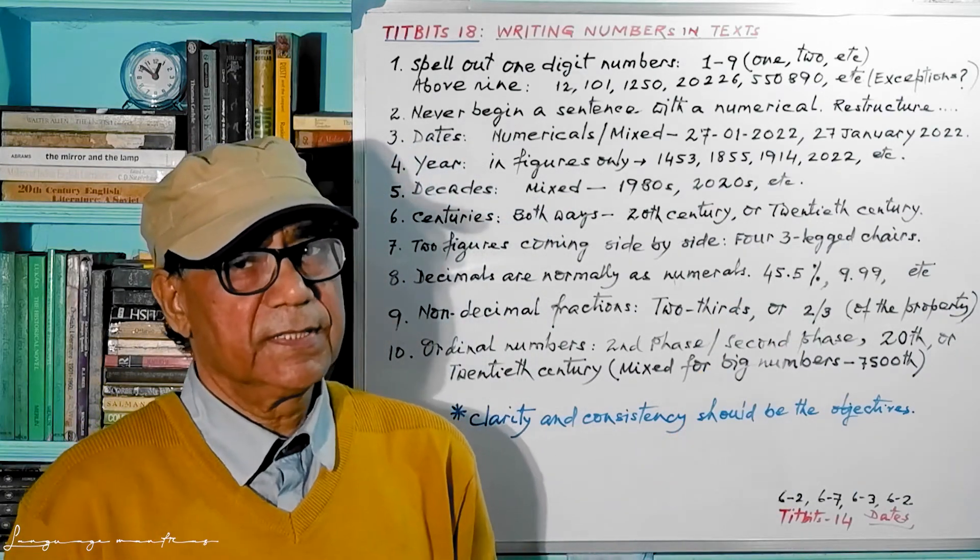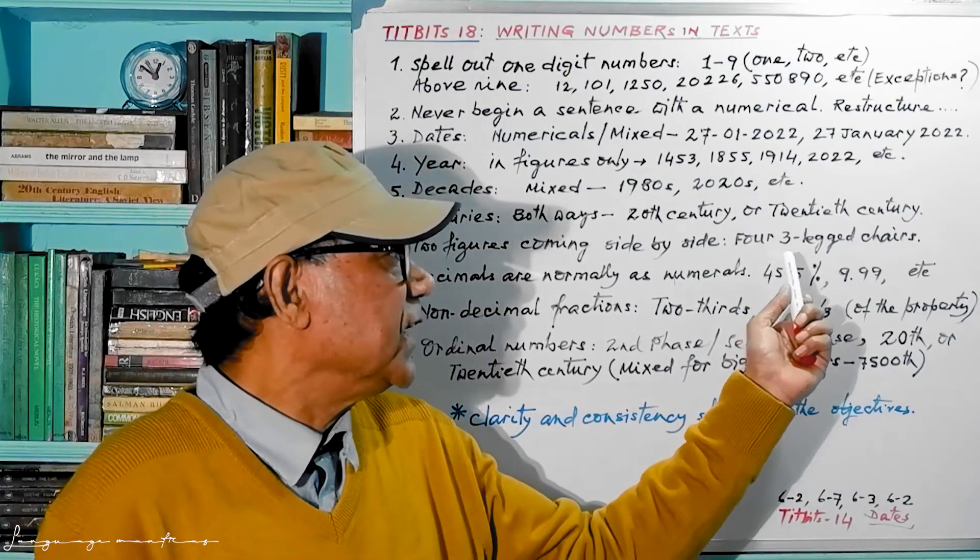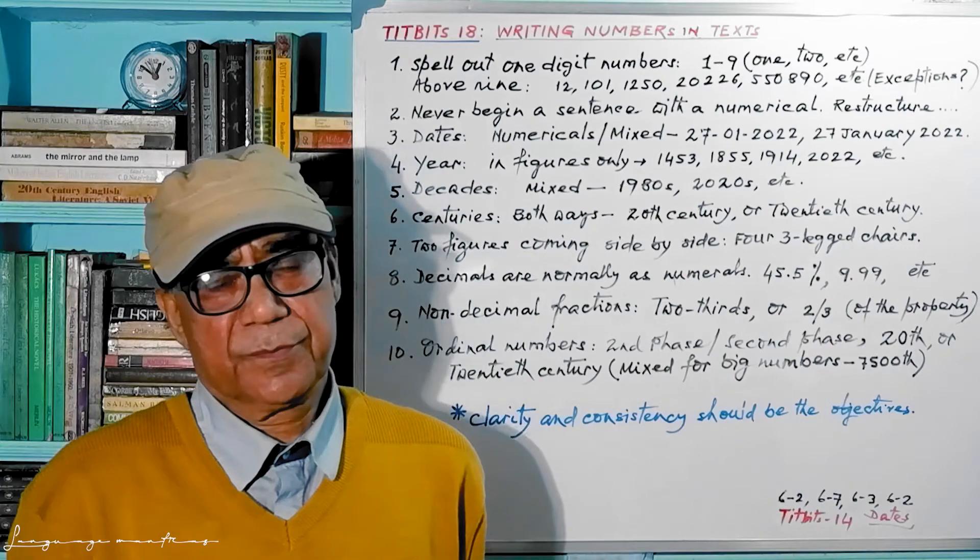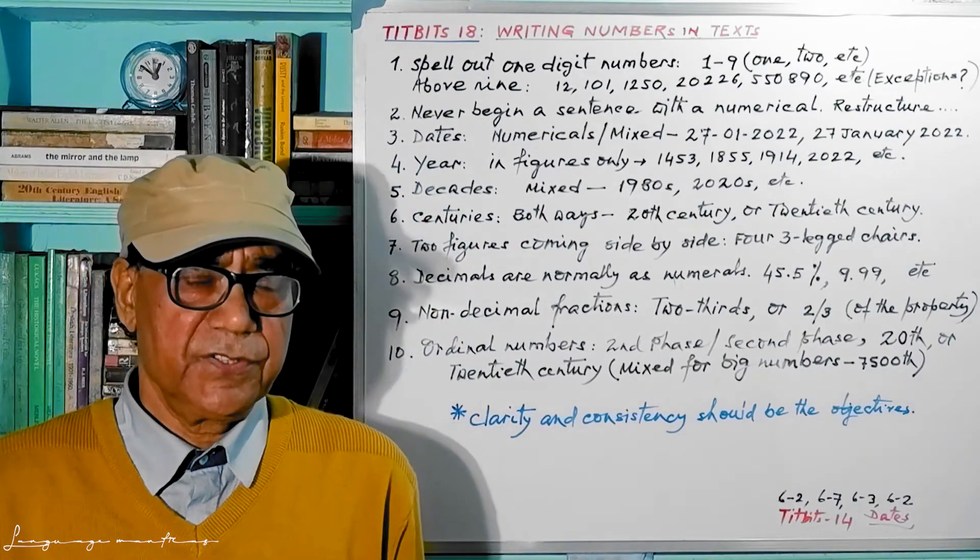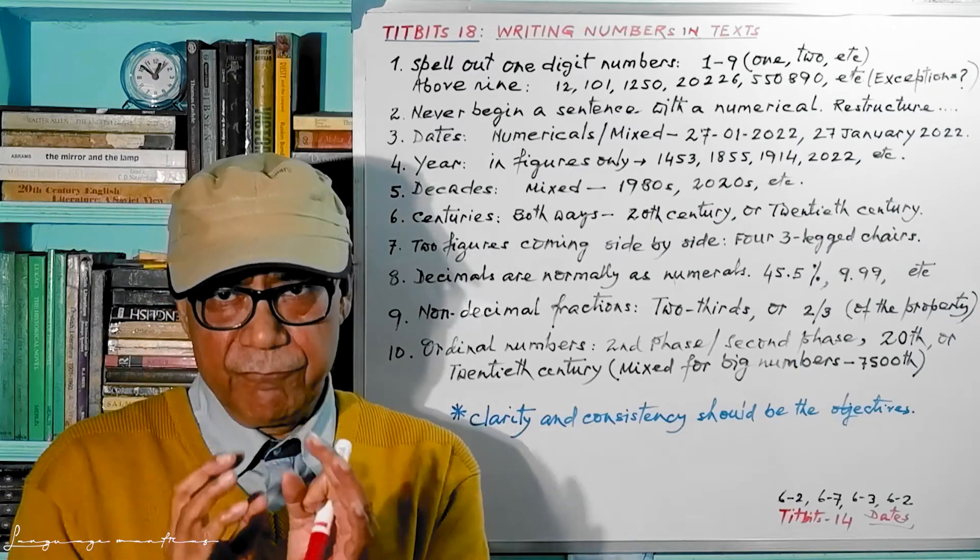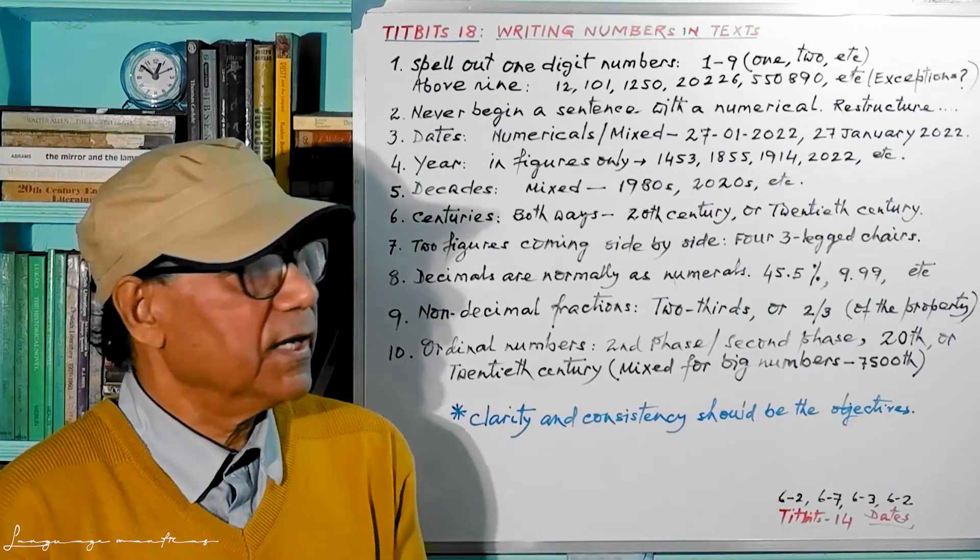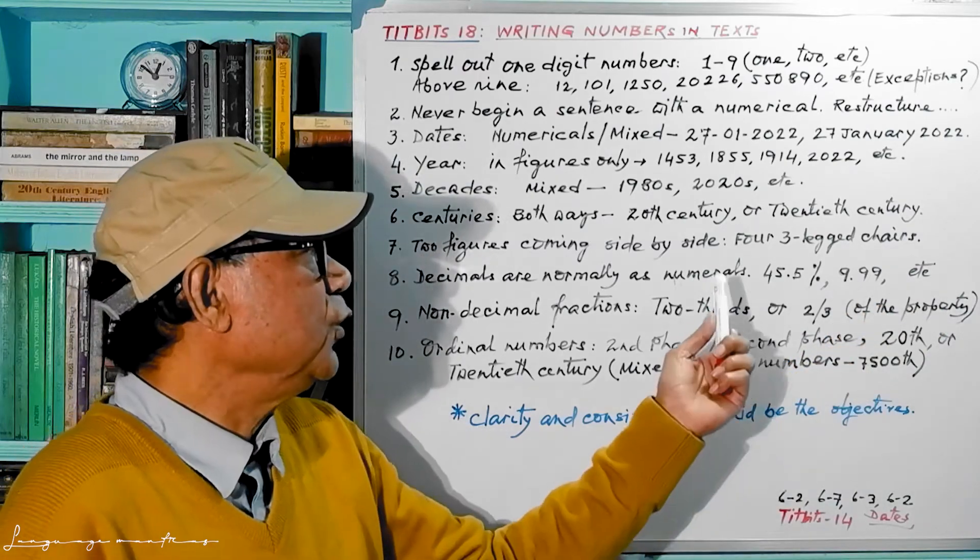So in that case, what will happen? You write four in word, then three in figure, and then hyphen 'legged' chairs. So 3-legged chairs, or any combination like this. You put the figure in the middle and on the left-hand side in word, and then chair, table, whatever.